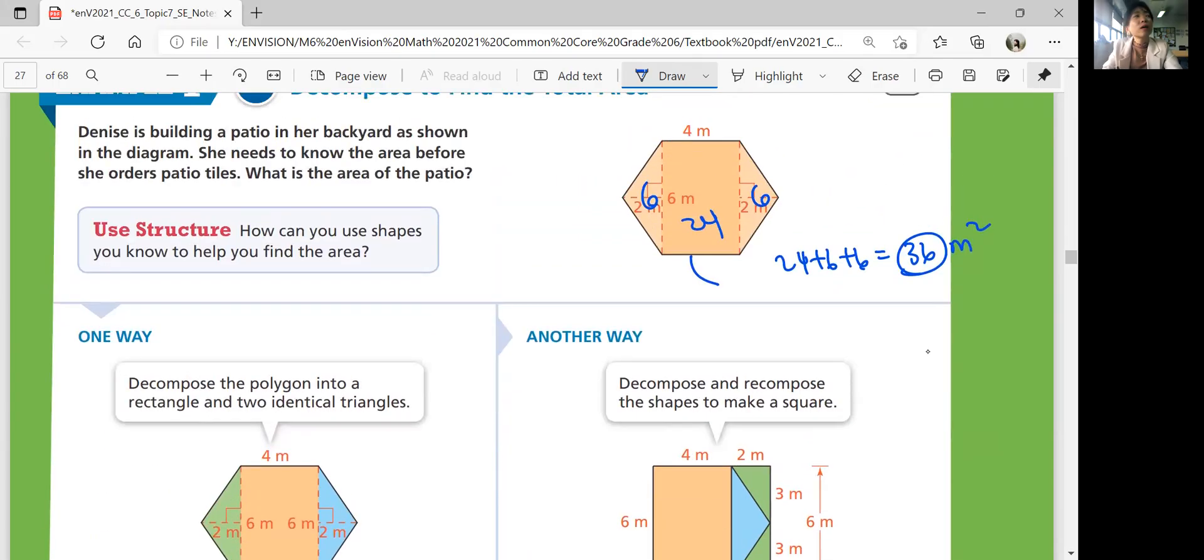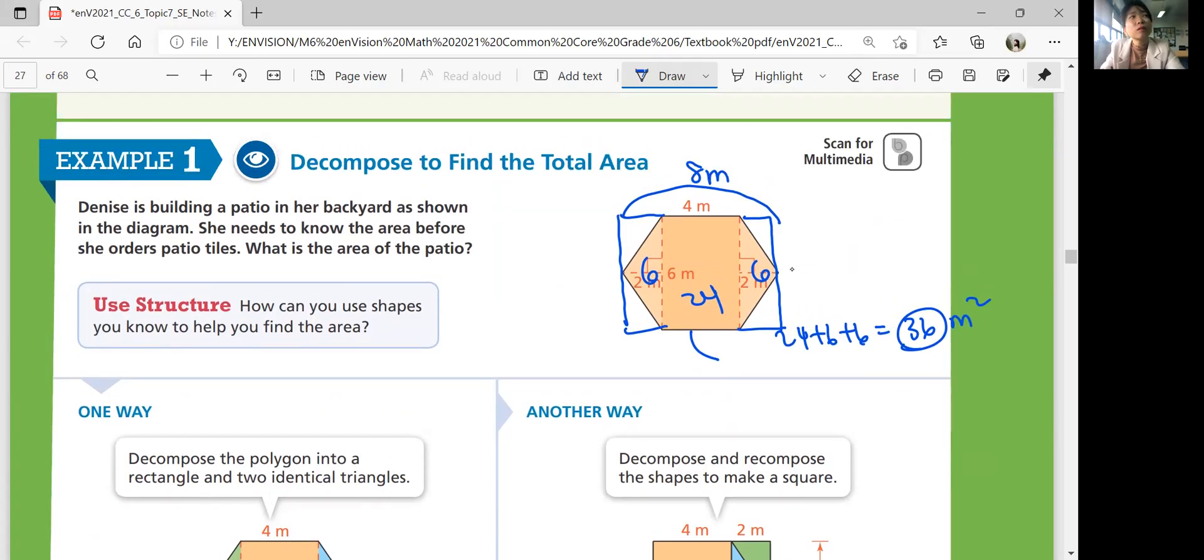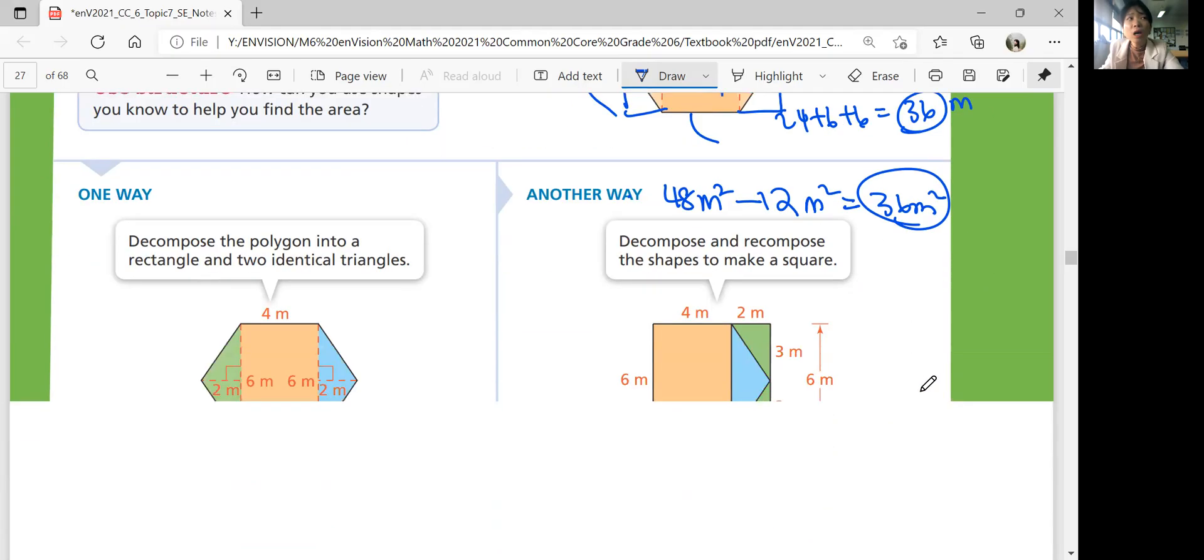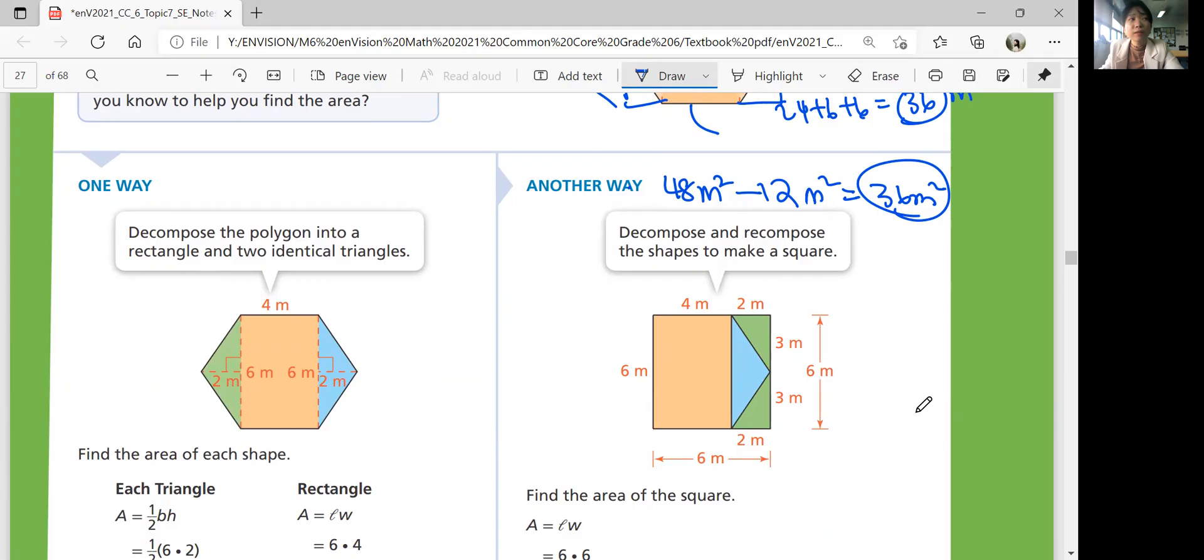Another way, you're going to find the area of this whole rectangle over here. How do you know this side? Well, that's 2 plus 4 plus 2. So that's going to be total 4 plus 2 plus 2, which is 8 meters. And then this is already given 6 meters. So 8 times 6 is 48. And so 48 square meters minus the area of these triangles over here, that's going to be 12 square meters. That's going to be 36 square meters as well. So your answer does not change because obviously it's the same area, but you can have multiple different ways to solve for the same answer.